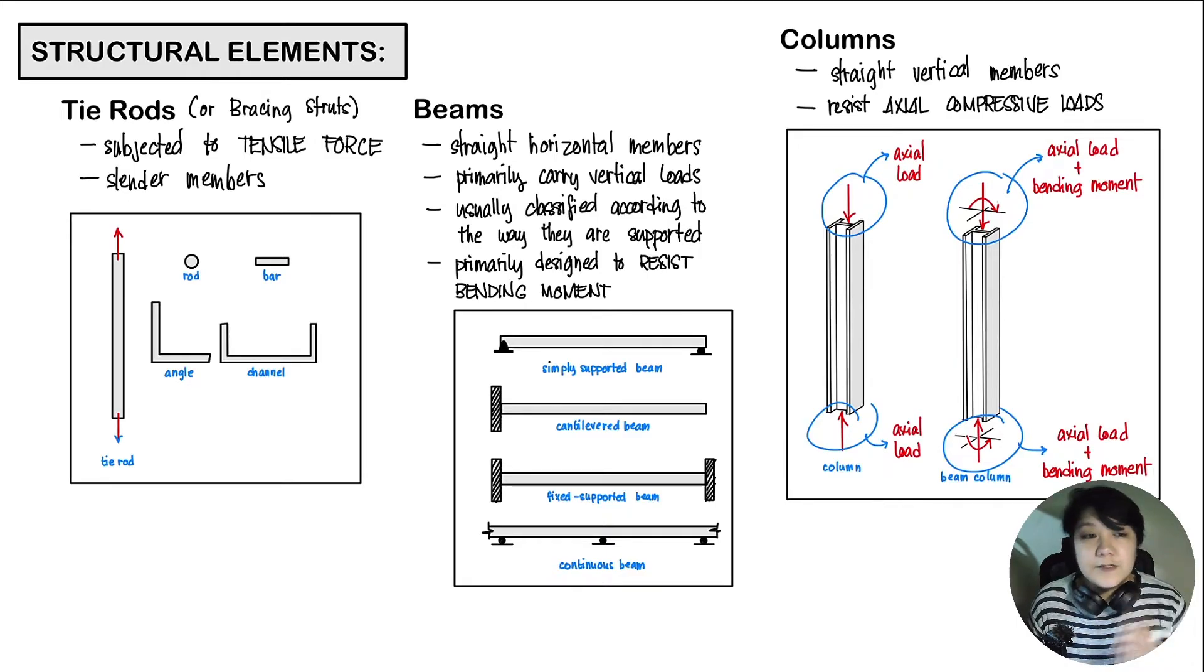The first thing that we need to discuss is the different structural elements or structural members that compose our structural system. We have three different common types of structural elements. The first one is our tie rods or our bracing struts. These elements are subjected to tensile forces, and they are usually slender in size. Typical cross-sections of our tie rods include a rod or a bar, angle bars, or channel bars.